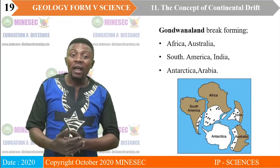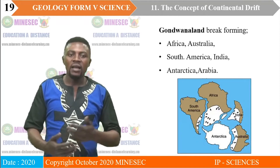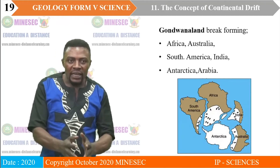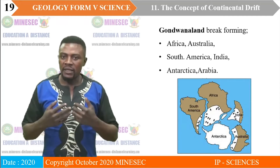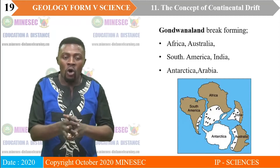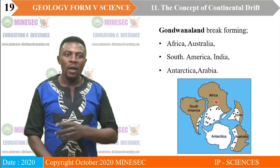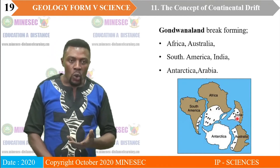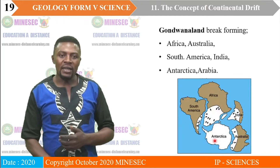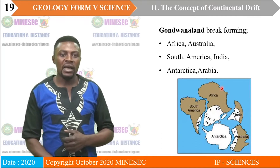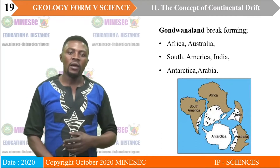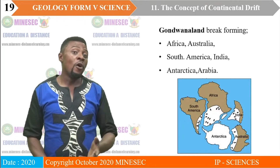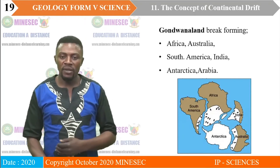Gondwana Land itself also broke apart, forming the present-day continents of Africa, Australia, South America, India, Antarctica, and Arabia. On the diagram, you can see Africa, the South American bloc, the Indian bloc, Antarctica, the Arabian continent, and the Australian bloc — all the continents of Gondwana Land formed some 270 million years ago.